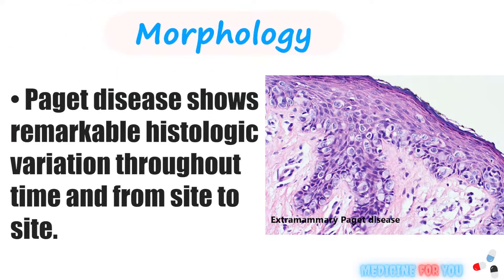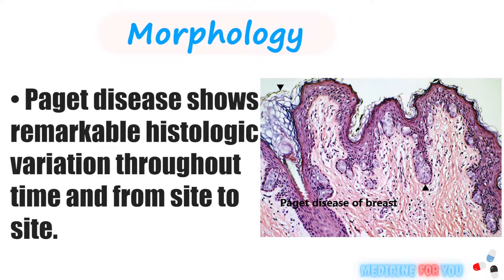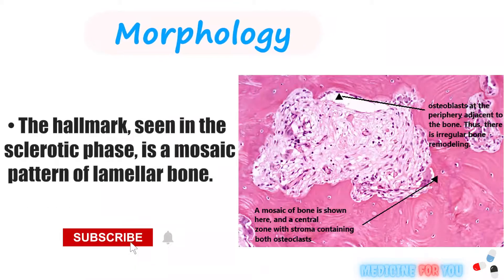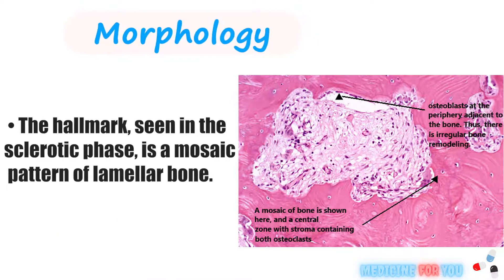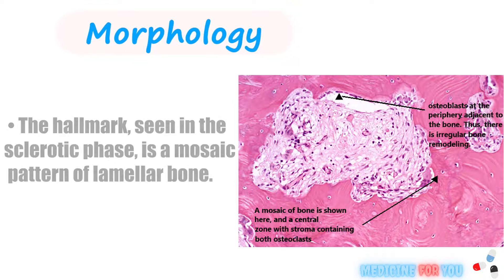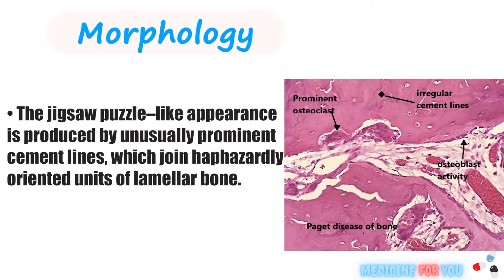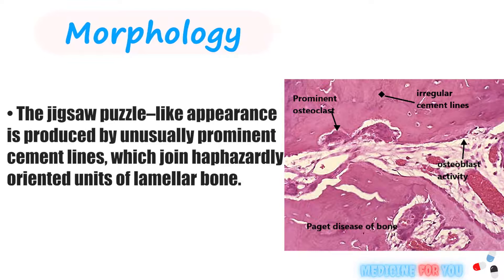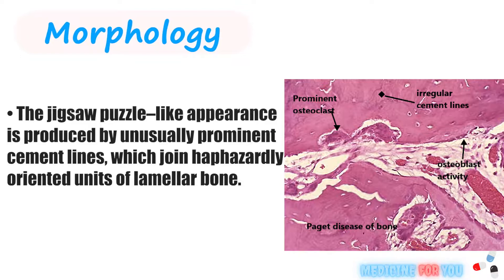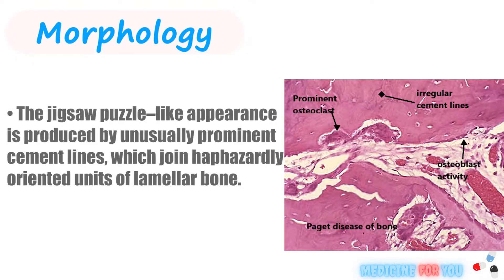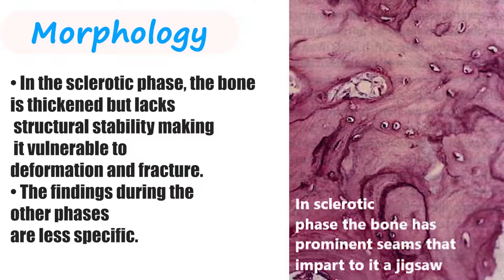Paget disease shows remarkable histologic variation throughout time and from site to site. The hallmark, seen in the sclerotic phase, is a mosaic pattern of lamellar bone. This jigsaw puzzle-like appearance is produced by unusually prominent cement lines, which join haphazardly oriented units of lamellar bone. In the sclerotic phase, the bone is thickened but lacks structural stability, making it vulnerable to deformation and fracture.